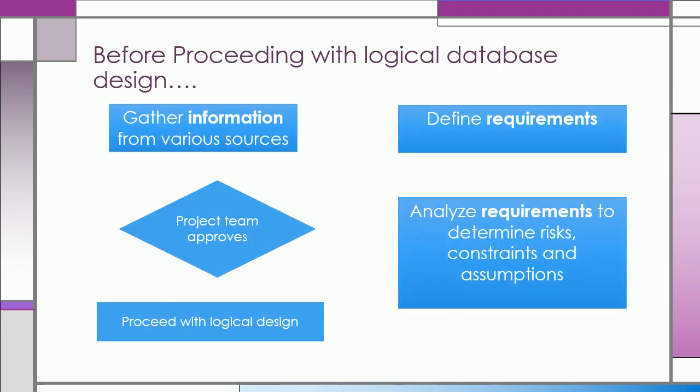Before we proceed with the Logical Database Design, we need to know that there are tasks that must be accomplished first. We need to gather information from various sources. After gathering information, we define the requirements. Then, we analyze the requirements to determine the risks, constraints, and assumptions. Then, the project team decides whether to approve it or not. If the project team does not approve of it, then we go back to the first step. If the project team approves of it, then we can proceed to the Logical Database Design.